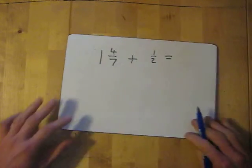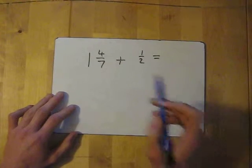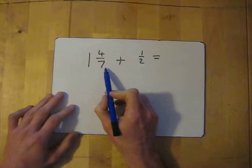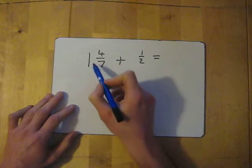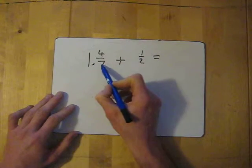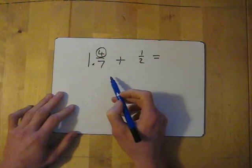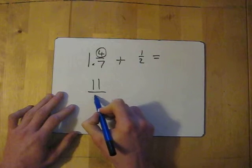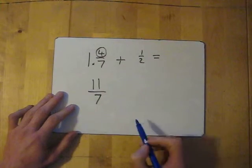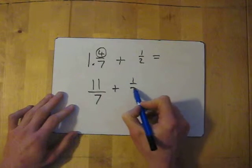Let's try a couple more. So we've got one and four sevenths, add a half. First thing: convert the mixed number into an improper fraction. So multiply and add — ask MA. One times seven is seven, then add the four onto that, so seven plus four is eleven. So we've got eleven over seven — the bottom number always stays the same — eleven over seven, add a half.